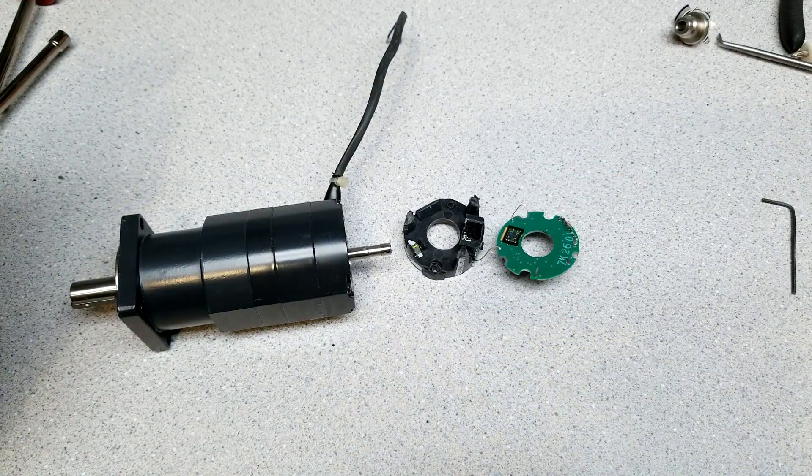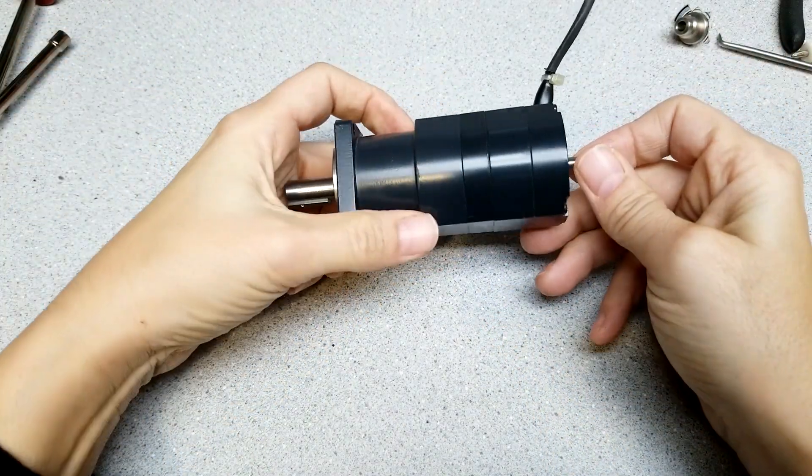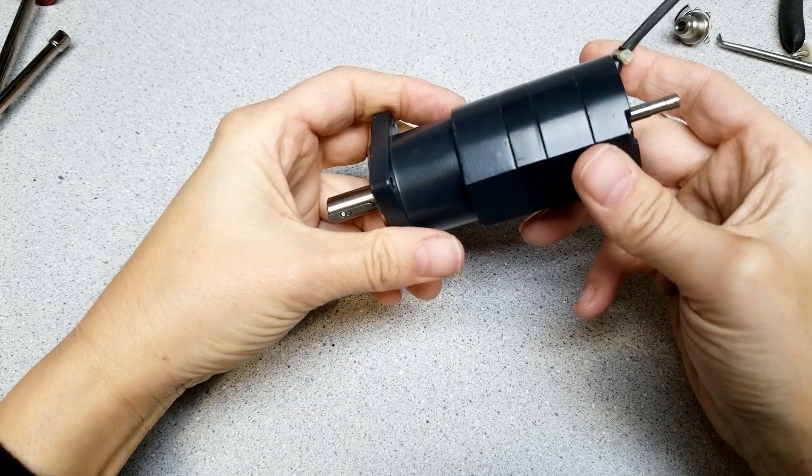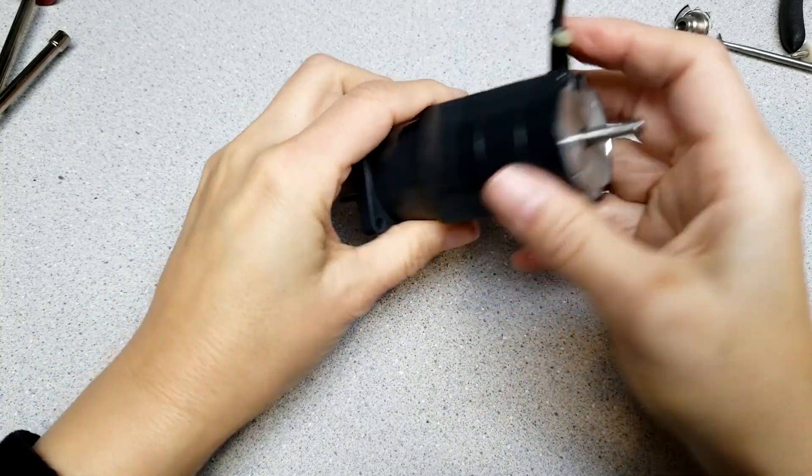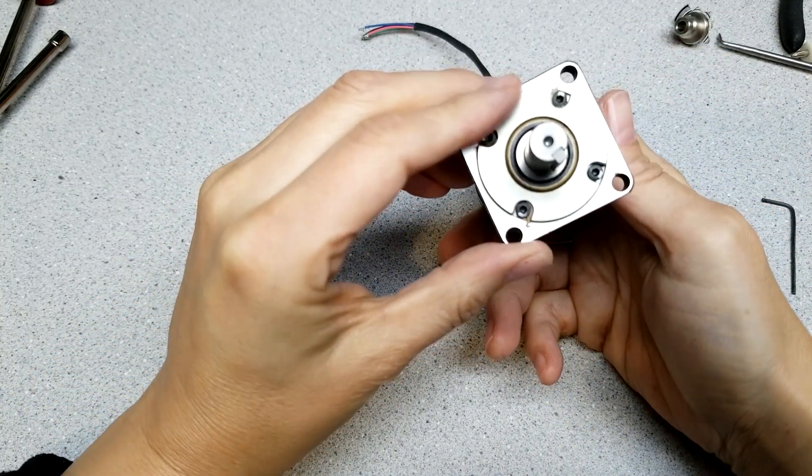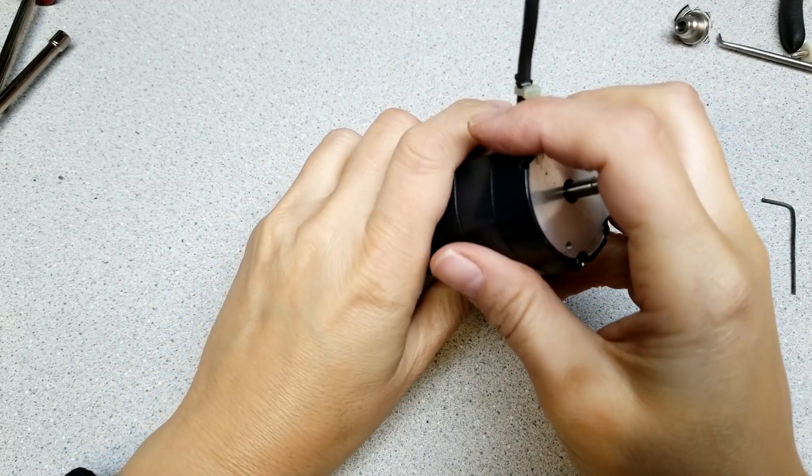And maybe part of the encoder wheel too. Now we're down to the stepper motor part. And I'm thinking I'll go in this way. And I'm trying to preserve this, but I still want to take a peek at it.